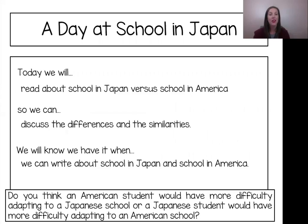Let's take a moment to look at our agenda together. Today we will read about school in Japan versus school in America so we can discuss the differences and the similarities. We will know we have it when we can write about school in Japan and school in America. And let's also look at our quick write for the day: Do you think an American student would have more difficulty adapting to a Japanese school, or a Japanese student would have more difficulty adapting to an American school? As we read today, we'll need to think about our quick write and take notes.